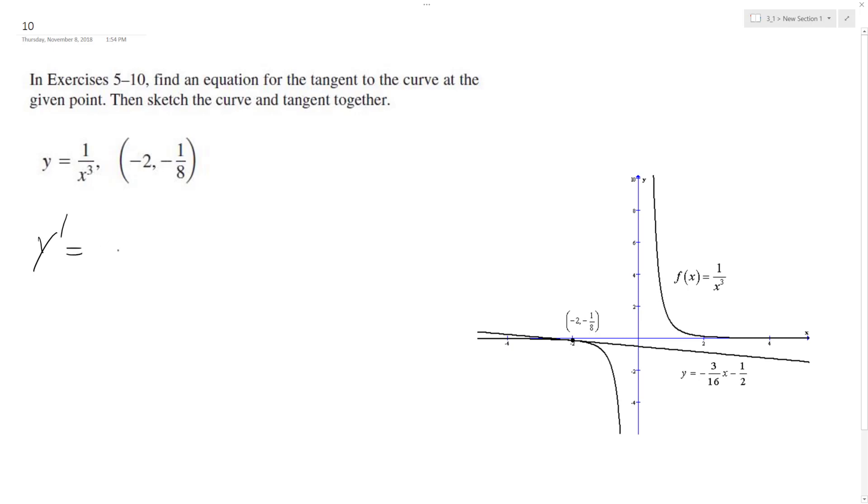So y prime, I'm going to rewrite this as x raised to the negative 3. So I'm going to bring down the exponent and then subtract 1 from it. So it's going to be equal to negative 3 x raised to the negative 4th.